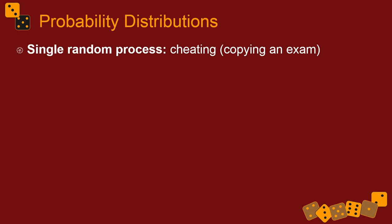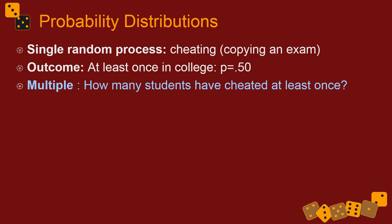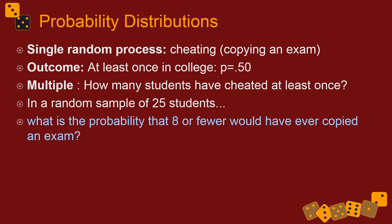Another single process might be cheating by copying an exam in college. One outcome might be that at least once in college, a person has copied an exam. National data suggests that about 50% of college students have copied an exam. From a multiple-event perspective, we ask: how many students have cheated at least once? Let's say we get a random sample of 25 students, and only 8 say they've ever cheated. We might question whether they responded honestly, and ask what's the probability that 8 or fewer people in a random sample of 25 would truly have ever copied an exam.